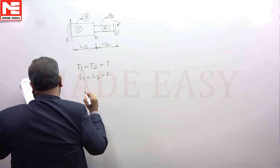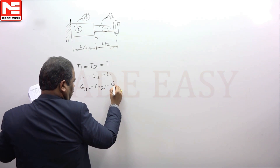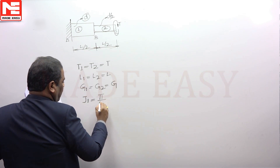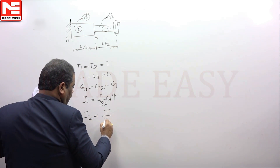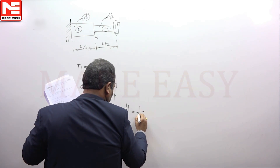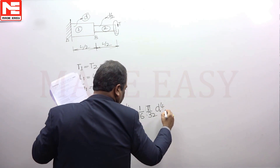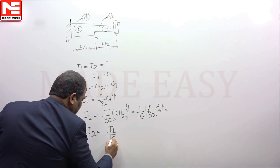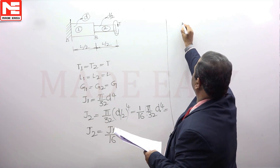The material is also the same. J1 will be pi by 32 times d to the power of 4. J2 will be pi by 32 times (d/2) to the power of 4, which gives J2 equal to J1 by 16.